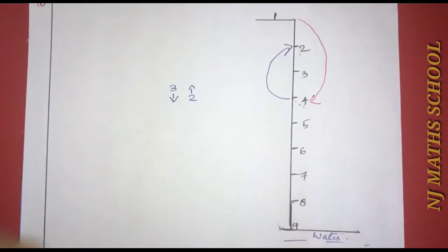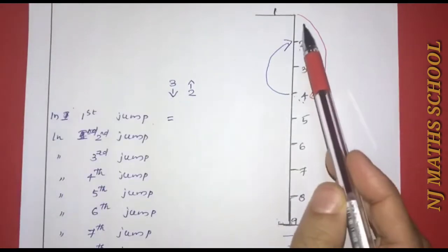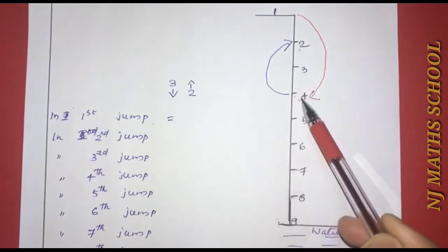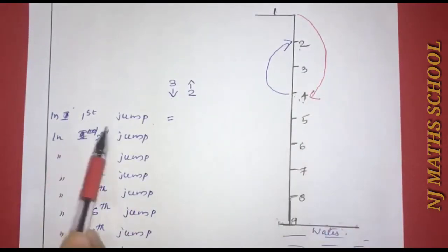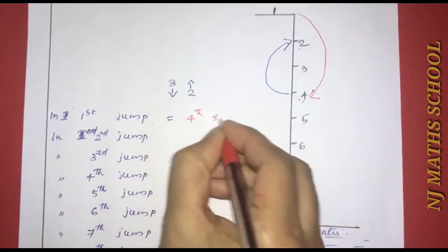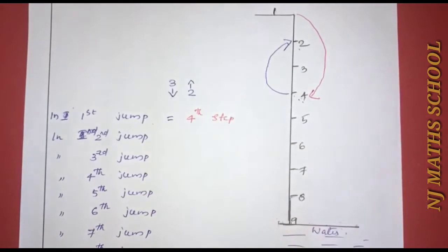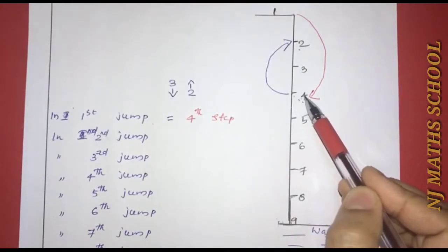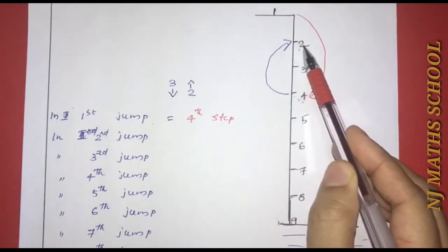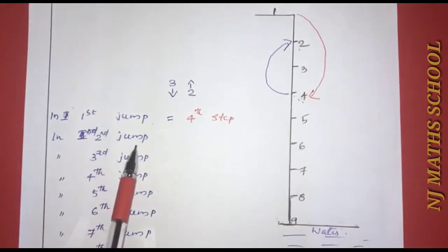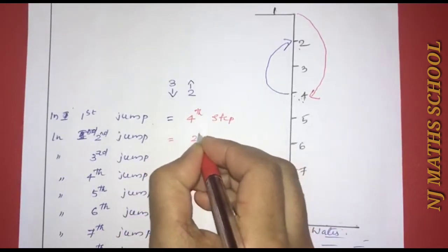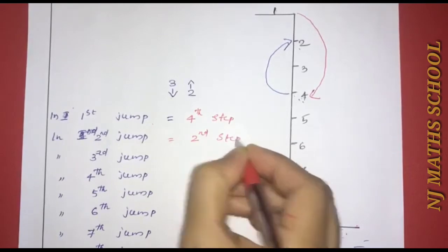In the first jump, the monkey will be at the fourth step — one, two, three — fourth step. Next jump, two steps up. Now the monkey will be at the second step. This is the second step.